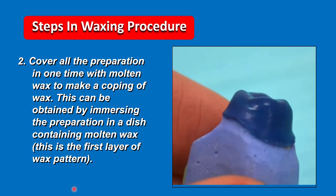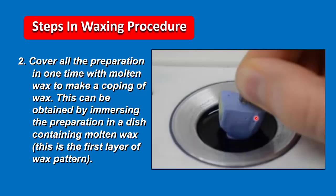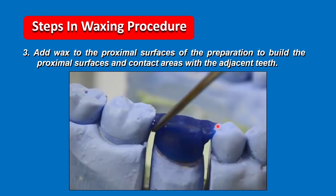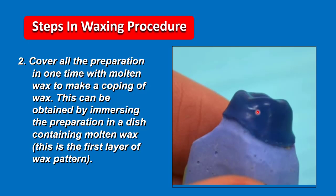Step 2 in the wax procedure is that we should cover the die with a uniform thickness of wax. This may be done by adding increments of wax one on top of the other, but this is not indicated because it may trap air bubbles between the layers. So the correct procedure is by dipping the die in a container of molten wax. This is the first layer, on top of which layers of wax are placed to form the tooth anatomy.